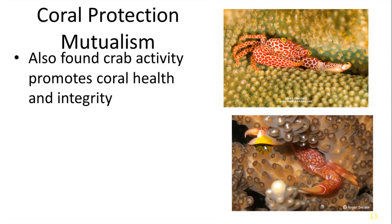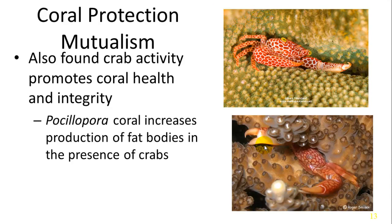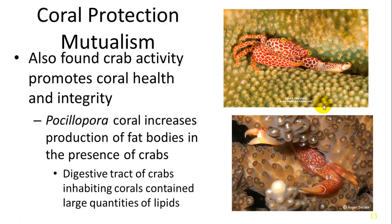Crabs did a similar thing — they promoted coral health and integrity. The release of fat bodies by the corals increased the ability of the crabs to grow, and the crabs would also protect the coral from starfish and other threats. Products of coral were found within the digestive systems of these crabs.